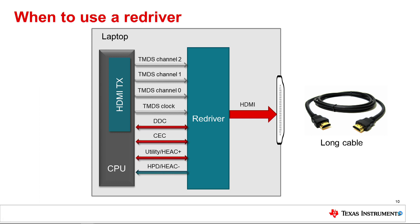Selection of a redriver versus a retimer is partially application-specific. In video source applications — PC, gaming systems, etc. — the majority of the jitter is caused by PCB trace length insertion loss. Since the signal will always attenuate by a certain amount when going through a fixed distance, a redriver is suggested for correcting the ISI jitter from long traces and cables. A retimer can also be used if additional jitter becomes prevalent in the system. With increased functionality, retimers can solve the majority of jitter issues in a system at the cost of higher power consumption.